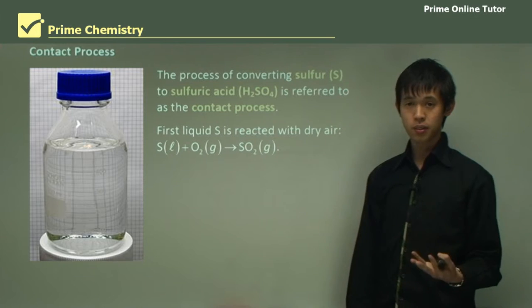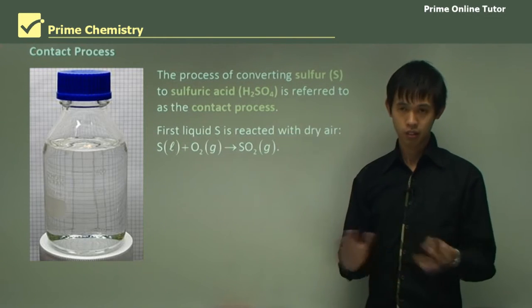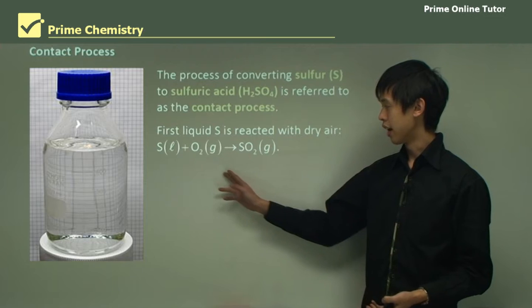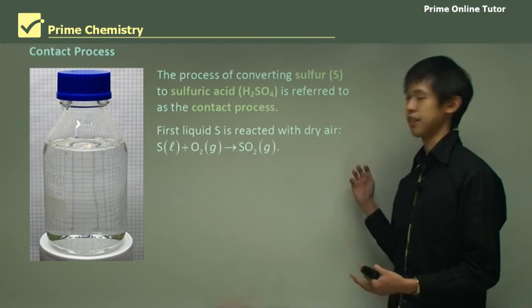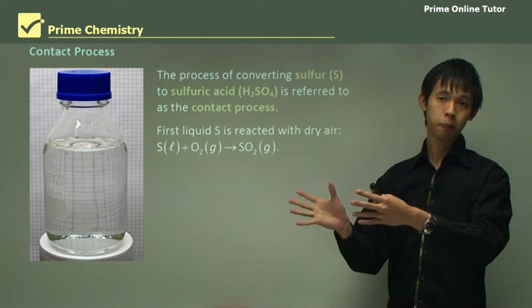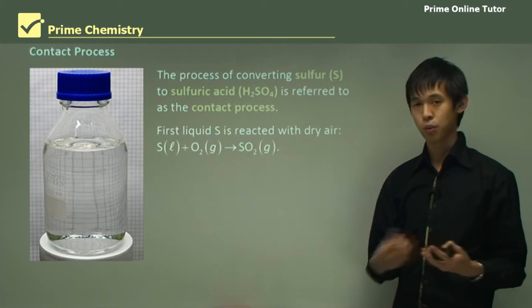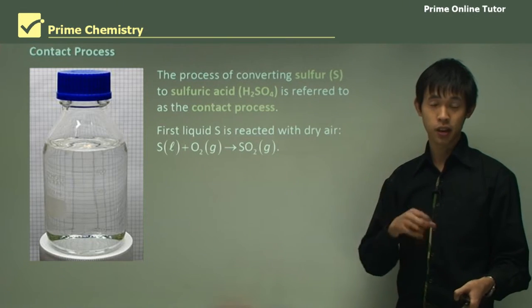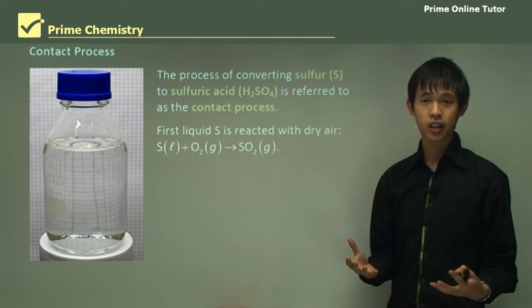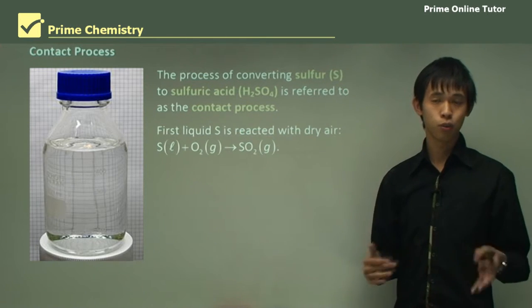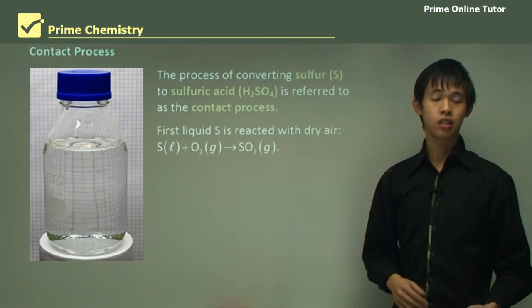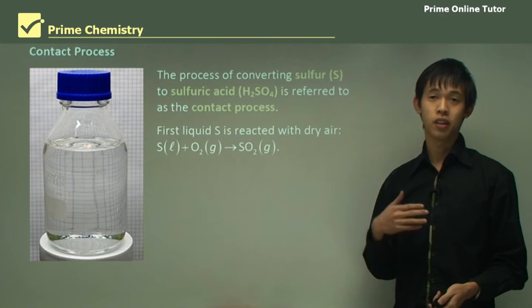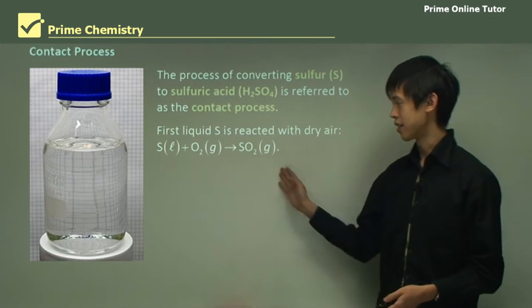The first thing we do is liquefy the sulfur with heat, melting it, and react it with dry air. We dehumidify the air that comes in so there's no water, because when we use the Frash process that superheated steam had lots of water around which inhibited SO2 production. We need to dry the air so we can actually produce this SO2.